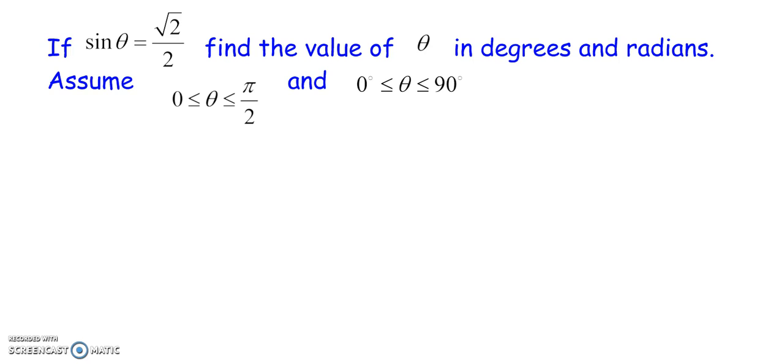All right. If sine theta is equal to radical 2 over 2, find the value of theta in degrees and in radians. Again, this assumption is just to assume for future reference. And this really goes back to your unit circle. So, this value is on your unit circle. You need to recognize it. So, if you know it's on your unit circle, it pulls right off your unit circle. Theta should be 45 degrees. Another way to say that, pi over 4 radians.